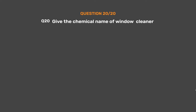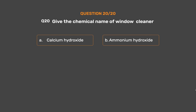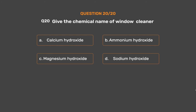Question number 20. Give the chemical name of window cleaner. Option A: Calcium hydroxide. Option B: Ammonium hydroxide. Option C: Magnesium hydroxide. Option D: Sodium hydroxide. The correct answer is Option B: Ammonium hydroxide.